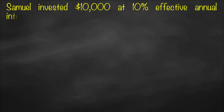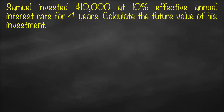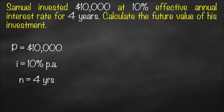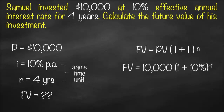Let's apply these four formulas to four different questions. Samuel invested $10,000 at a 10% effective annual interest rate for four years — calculate the future value of his investment. Our variables: PV = $10,000, i = 10% per annum, n = 4 years. Since interest and time share the same unit, future value equals 10,000 multiplied by (1 plus 10%) to the power 4, giving a future value of $14,641.